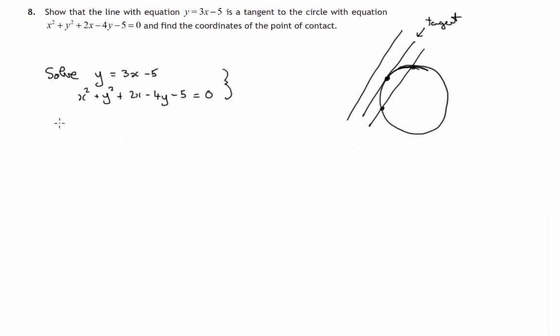What we'll do is replace y by 3x minus 5 in the circle equation. Every time we come across a y, we'll replace it by 3x minus 5, since both equations are true at the same time. Replacing y by 3x minus 5, we get an equation with just x's in it.